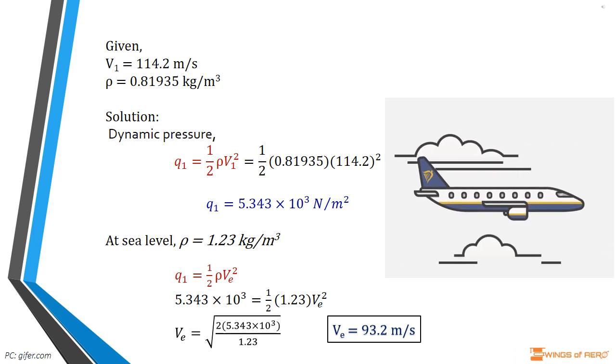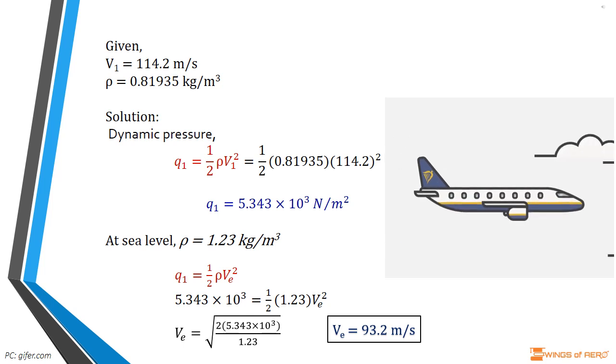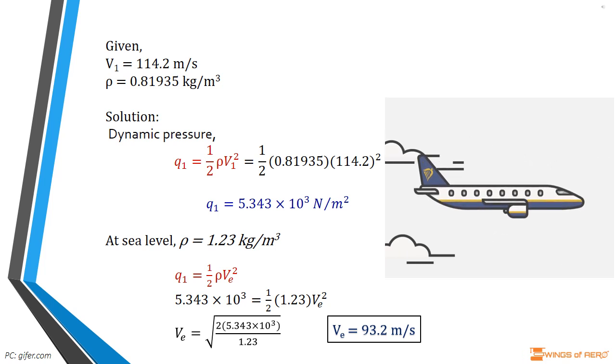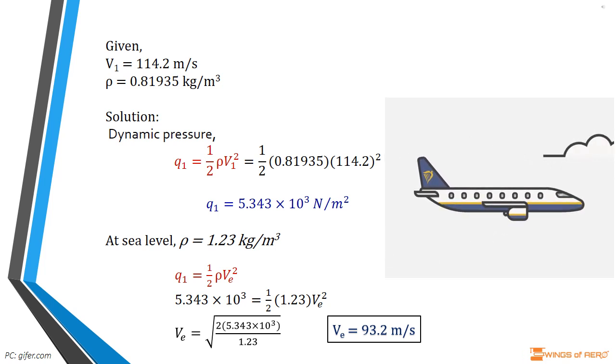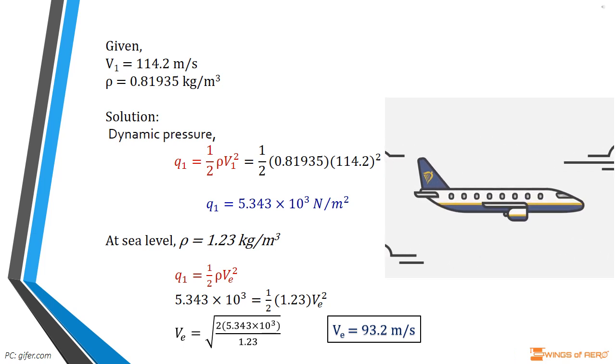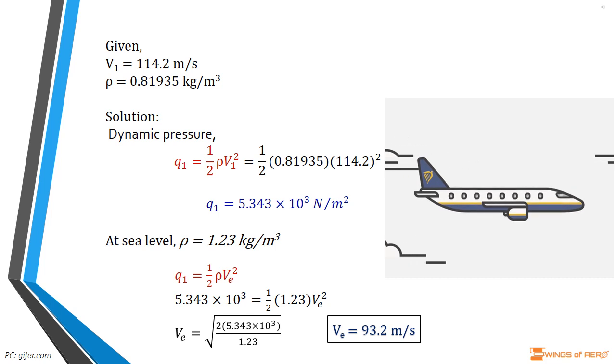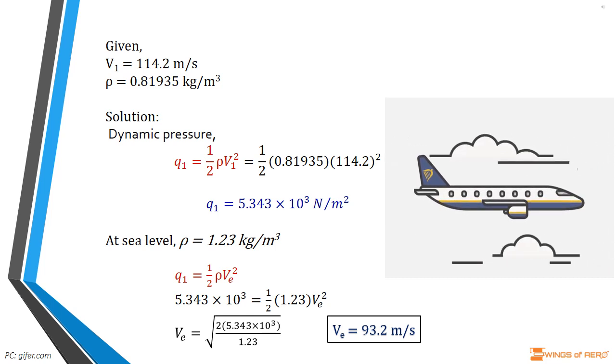Consider an airplane flying at some true airspeed at some altitude. Its equivalent airspeed at this condition is defined as the velocity at which it would have to fly at standard sea level to experience the same dynamic pressure. In this problem, we have the P-35 flying at an altitude of 4 kilometer at a true airspeed of 114.2 meter per second and simultaneously at an equivalent airspeed of 93.2 meter per second.